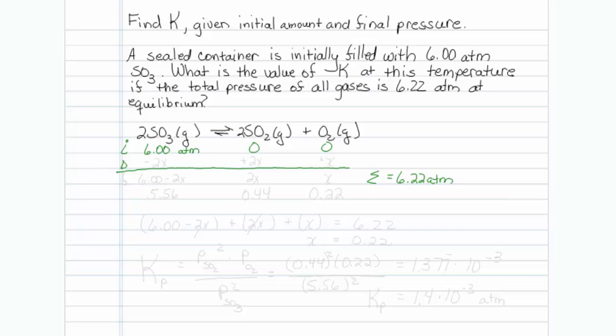So let me represent the amount of reaction as x. I'm going to lose minus 2x here plus 2x here and x here. So this is 6.00 minus 2x when I bring it down to the final row. So this is 2x and this is x.